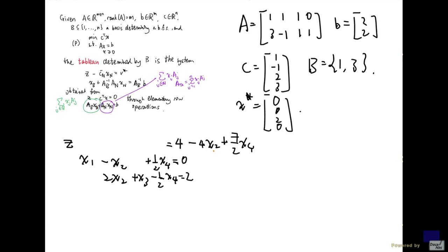Now, notice that if I manage to find a feasible solution for P such that x_2 is non-zero and x_4 is 0, then I'll have a feasible solution with objective function value better than that of x star. Currently, the objective function value of x star is 4, right?